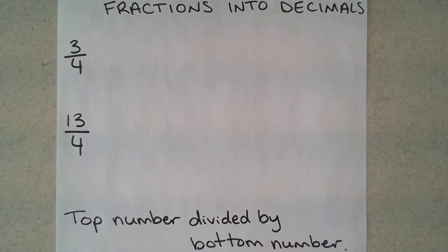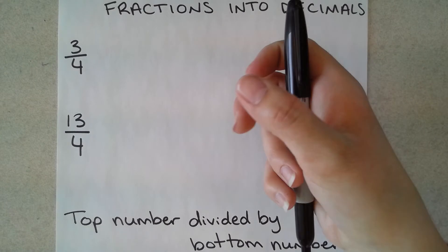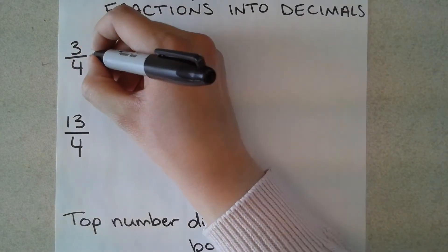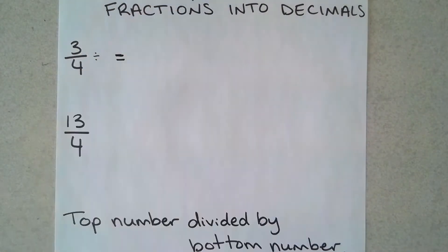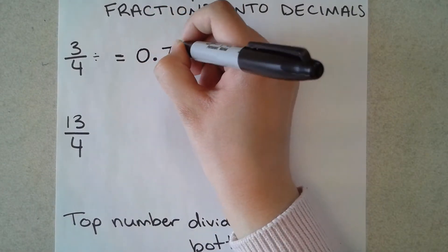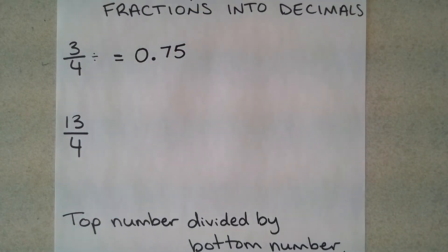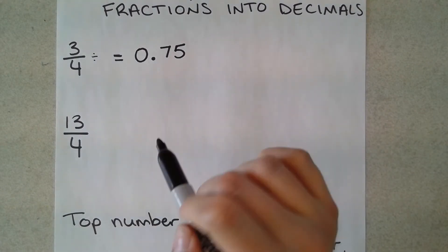Let's do this first one. We're going to do three quarters, so we're going to do the top number — three — divided by the bottom number, which is four. You can put this into your calculator and just do three divided by four. It should show you a decimal number, and the decimal it'll give you is 0.75. That's it, that's your answer. You don't have to round off your numbers — however many numbers you get after the decimal, that's your answer.